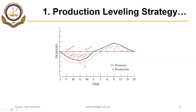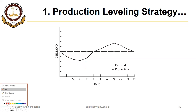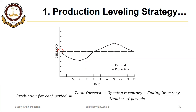How can we set up this average level of production? There is a simple formula: production for each period equals total forecast for the planning horizon, minus opening inventory carried from before the planning horizon, plus ending inventory if you want to carry some inventory into the next planning horizon, all divided by the number of periods. For a one-year horizon, the number of periods will be 12 months. This gives you a baseline value for production.